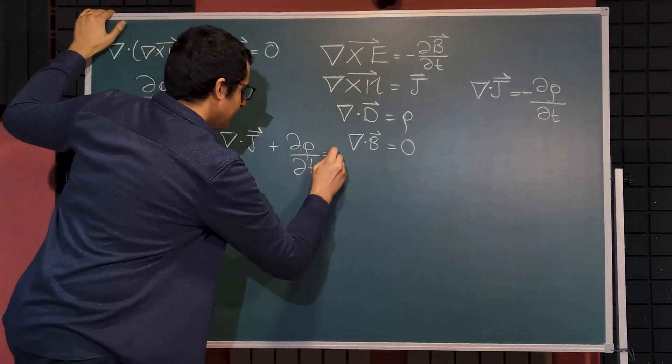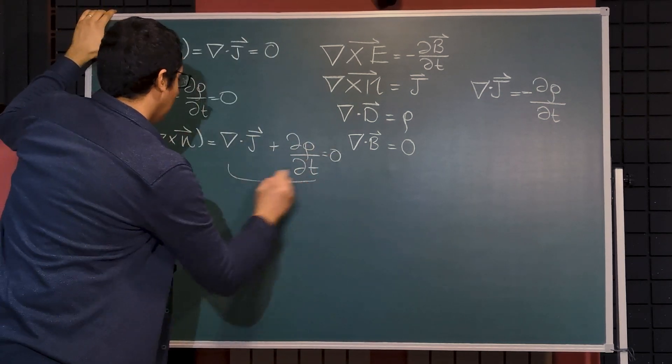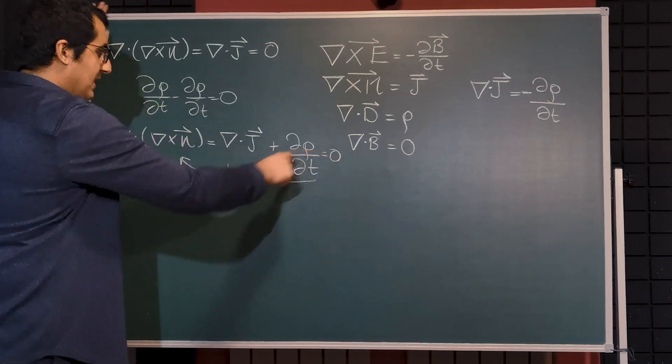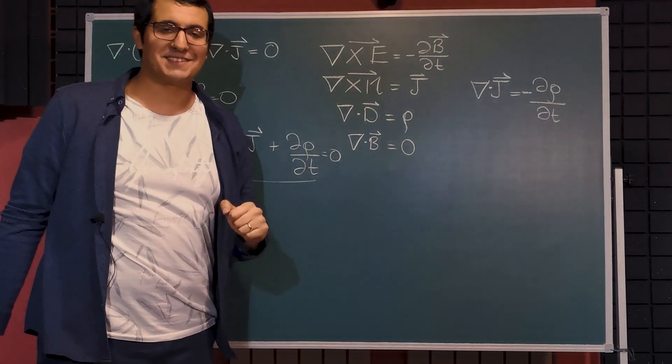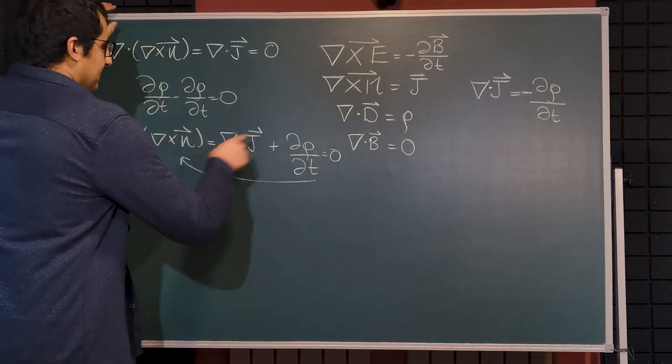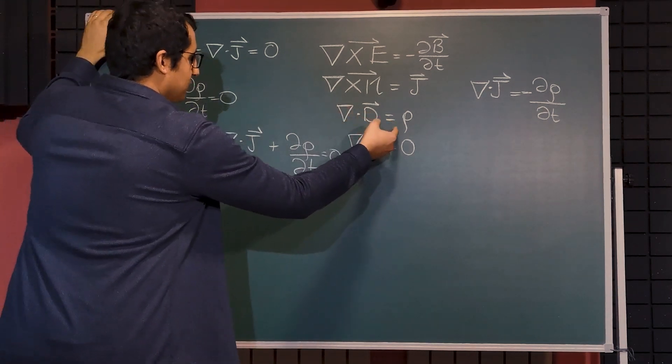That means since divergence of J is equal to minus partial ρ partial t, this will become zero, but this is also satisfied. Because this identity must be zero and the equation is also satisfied. So therefore, we can also say,